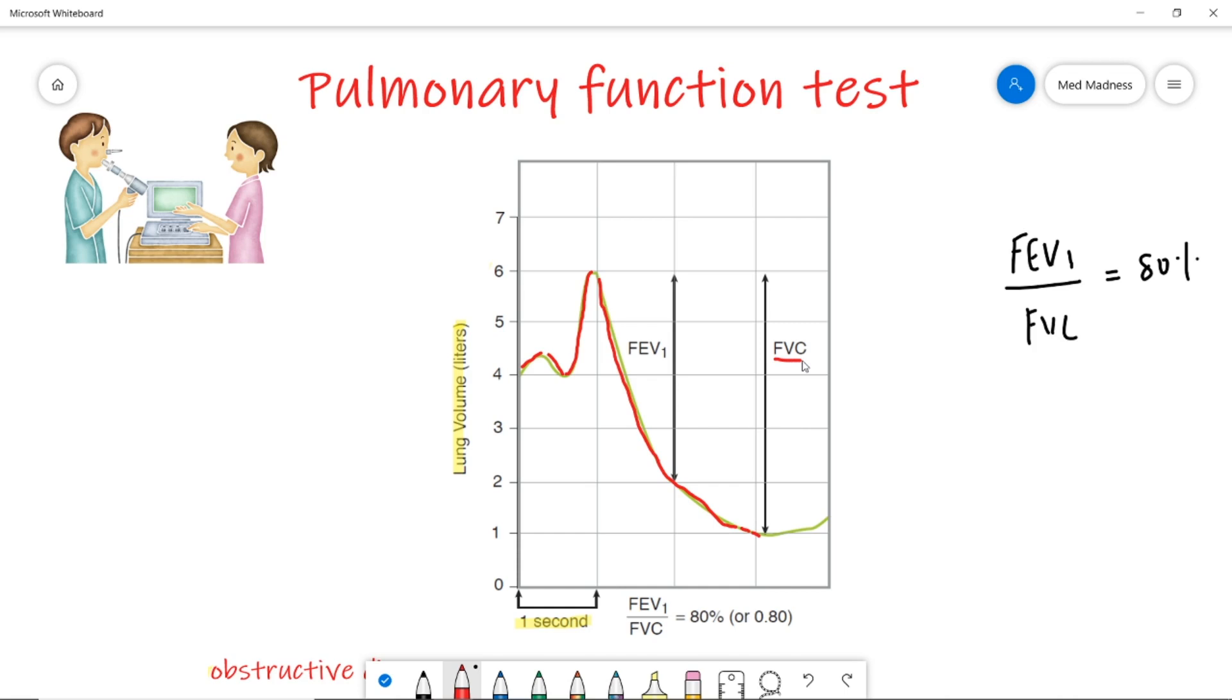What is forced vital capacity? It is a maximum amount of air that you can expel out of a lungs after a maximal inspiration. So, this is forced vital capacity. Normally, you have about 5 liters.